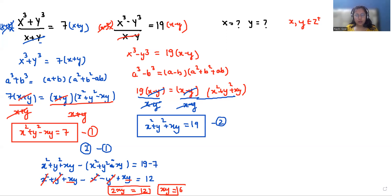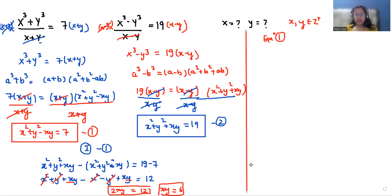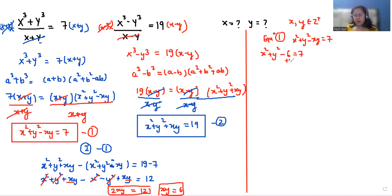Now according to equation 5, x squared plus y squared minus xy equals 7. Substituting the value of xy which is 6: x squared plus y squared minus 6 equals 7. Now adding 6 to both sides, so x squared plus y squared equals 13.